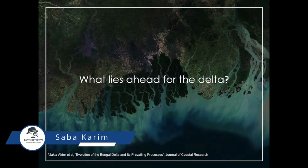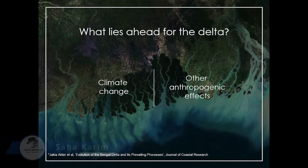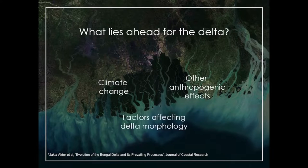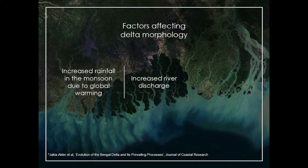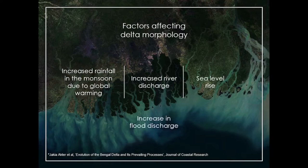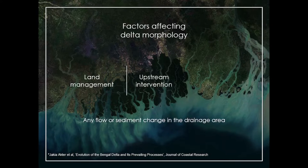As the Bengal delta is still evolving and the world is becoming more prone to climate change and other anthropogenic effects, the delta might witness some changes in the future. During the last 250 years, studies have confirmed that the morphology of the delta is triggered by some controlling factors. Scientists have predicted that in the future, rainfall may increase in the monsoon season due to global warming, which may lead to an increase in river discharge and sea level rise. These changes may prompt an increase in flood discharge, which may change the delta morphology significantly. Any flow or sediment change in the drainage area is another key factor that might affect the delta morphology. Land management, upstream intervention, and agriculture practices may change the flow and sediment availability, which may further lead to the change of the future Bengal delta.